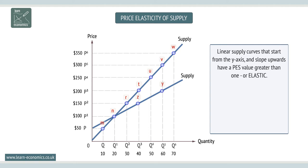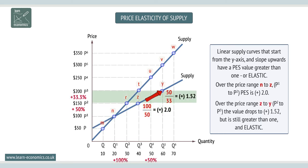Over the price range n-to-z, P1 to P2, PES is plus 2.0. Over the price range z-to-y, P2 to P3, the value drops to plus 1.52, but is still greater than 1, and elastic.